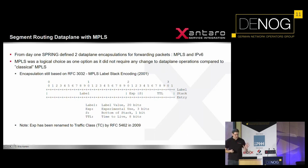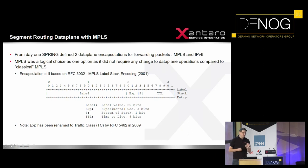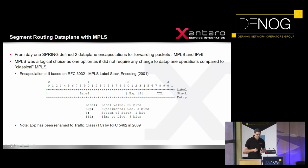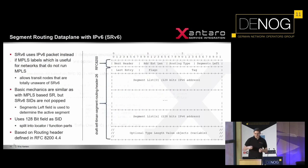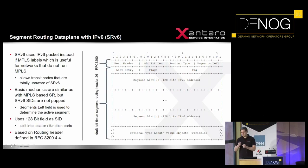This was what was in there for MPLS, but from day one SPRING was actually also considering IP version 6 as the data plane. I'm going to talk about this in a little more detail now because there are some fundamental differences with the forwarding compared to MPLS.